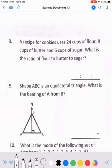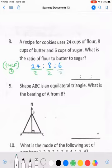A recipe for cookies uses 24 cups of flour, 8 cups of butter, and 6 cups of sugar. What's the ratio of flour to butter to sugar? So we have 24 ratio 8 ratio 6. We need to simplify them by dividing by the highest common factor. Highest common factor of 24, 8, and 6 is 2. Divide that by 2, divide that by 2, divide that by 2. That gives me an answer of 12 and then 4 and then 3.